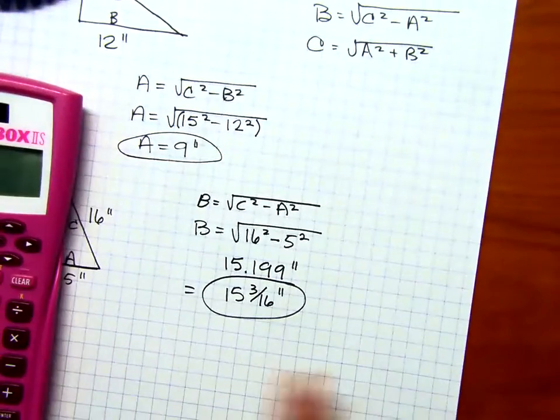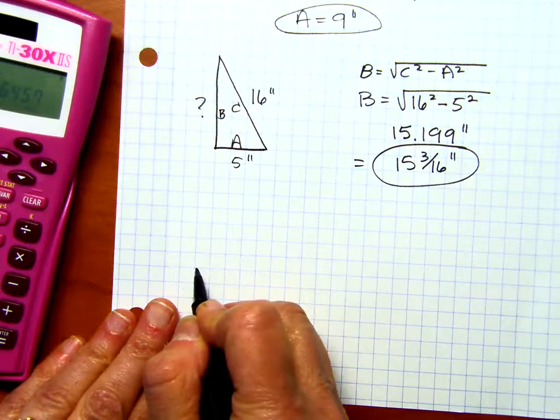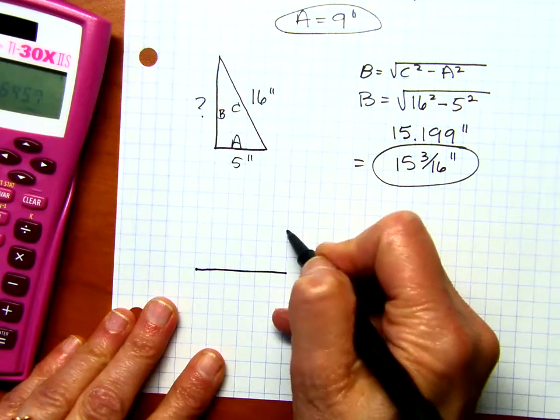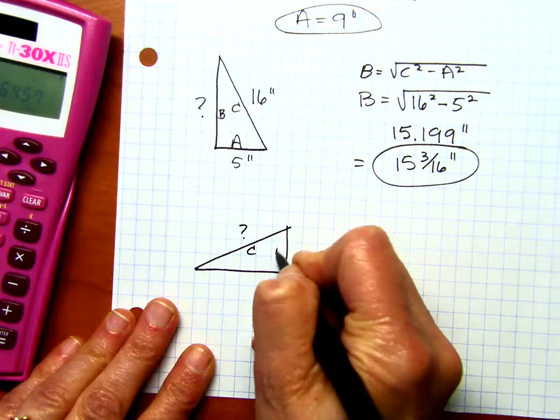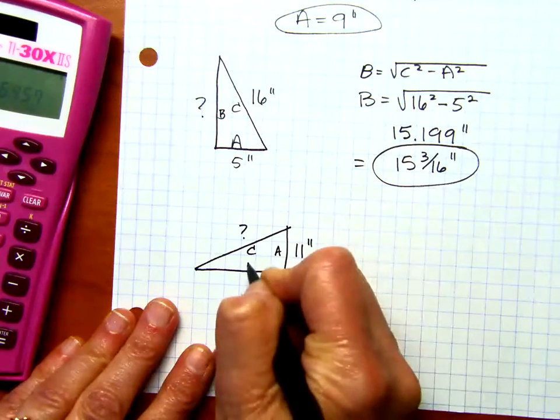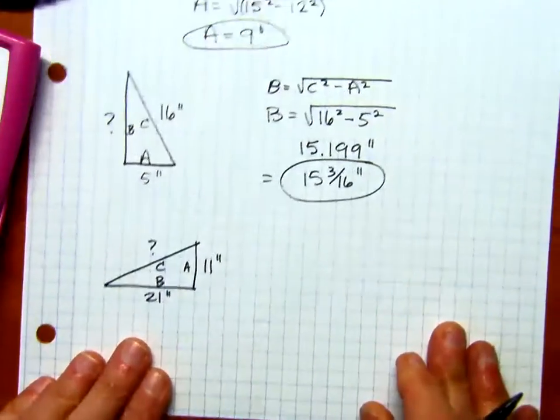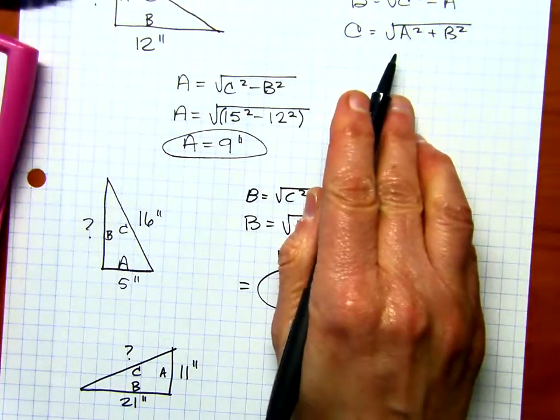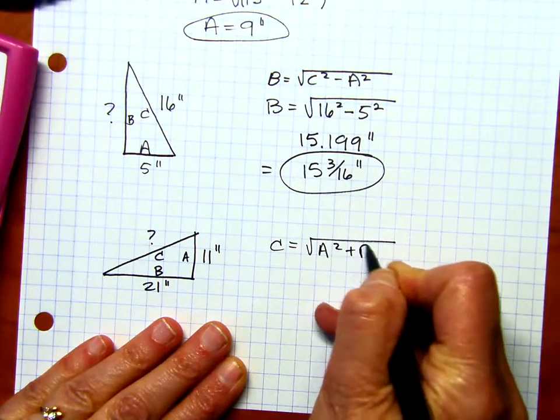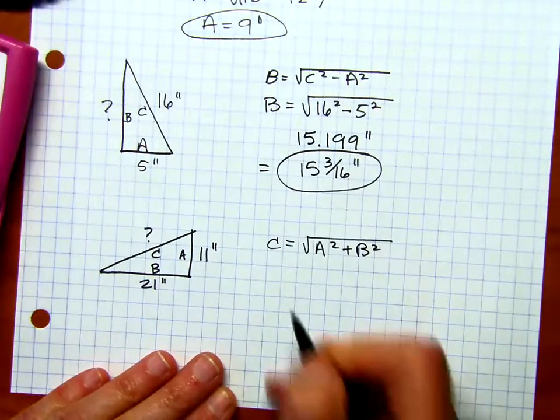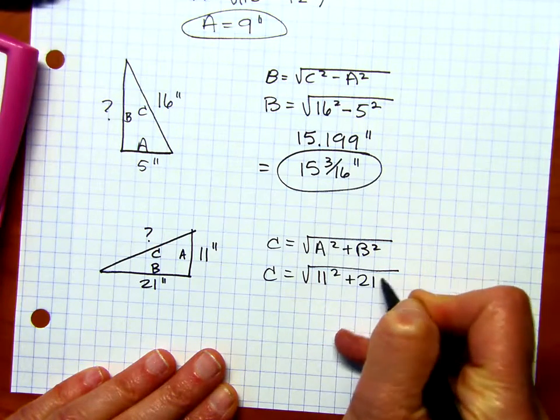Now, we'll do one more problem. And let's say we're going to solve for C. So again, I'm going to draw a picture. And we'll say this is C. We don't know what that is. A is going to be 11 inches, and B will be 21 inches. Now, because I'm solving for C, this is the formula I want to write down. So C equals the square root of A squared plus B squared. The second step is to plug in the numbers that are given.